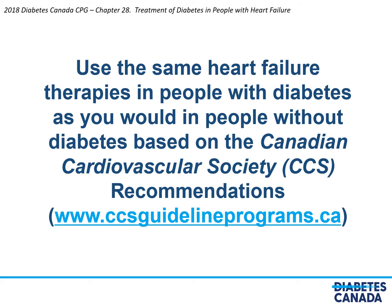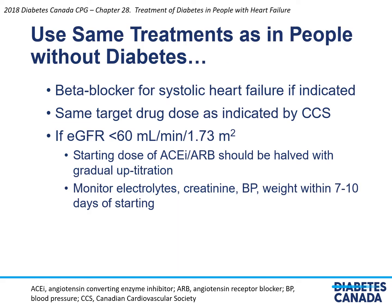When considering therapies for patients with diabetes and heart failure, one should use the same heart failure therapies as would be considered in people without diabetes. This recommendation is based on the Canadian Cardiovascular Society Heart Failure Recommendations. Beta blockers should be used for heart failure with reduced ejection fraction — that is, an ejection fraction less than 40% — if indicated, targeting the same drug doses as indicated by the Canadian Cardiovascular Society.